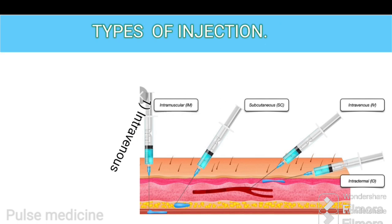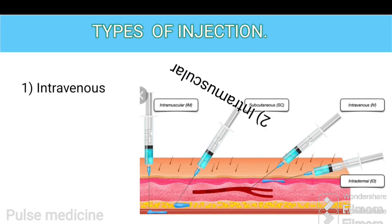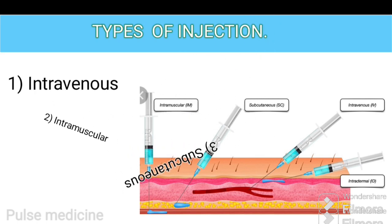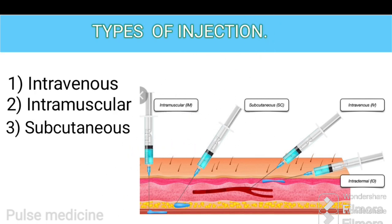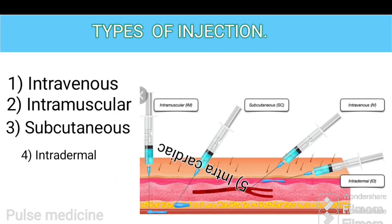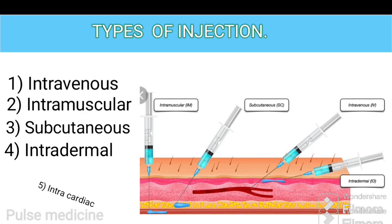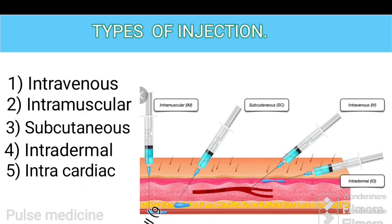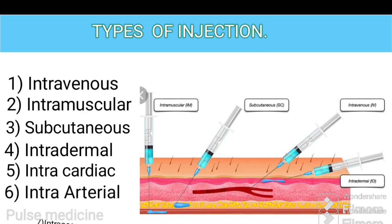Types of injection: number one, intravenous; number two, intramuscular; number three, subcutaneous; number four, intradermal; number five, intracardiac; number six, intra-arterial; number seven, intraosseous.